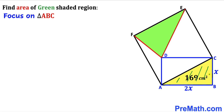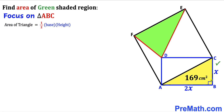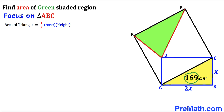Let's focus on the yellow right triangle ABC and recall the area of a triangle formula: area equals one-half times base times height. Since we are dealing with a rectangle, the angle is 90 degrees. The base of the yellow triangle ABC is 2x and the height is x, and the area is 169. So: 169 = ½ × 2x × x. The 2 and ½ cancel, giving us x squared equals 169.